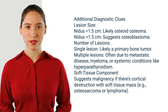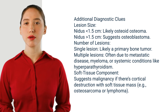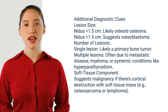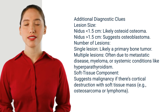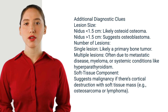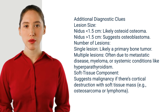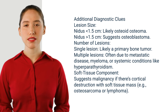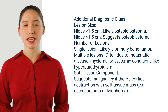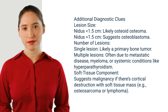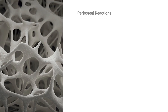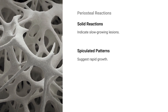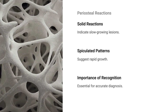Additional diagnostic clues — lesion size: a nidus smaller than 1.5 cm likely indicates osteoid osteoma; larger than 1.5 cm suggests osteoblastoma. Number of lesions: a single lesion likely indicates a primary bone tumor; multiple lesions often suggest metastatic disease, myeloma, or systemic conditions like hyperparathyroidism. Soft tissue component suggests malignancy if there is cortical destruction with a soft tissue mass — for example, osteosarcoma or lymphoma. A solid periosteal reaction indicates slow-growing lesions, while a spiculated pattern suggests rapid growth.